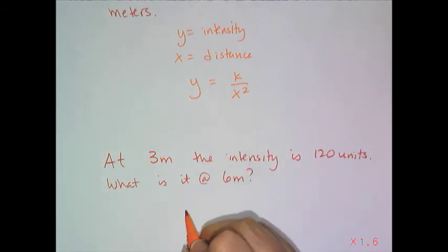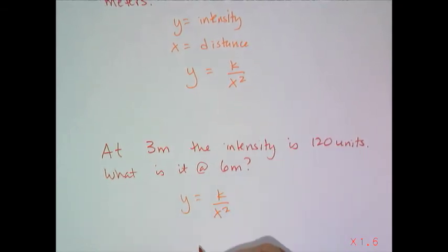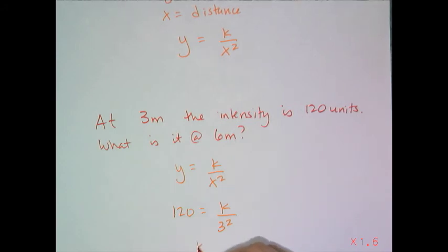I'm going to take my equation y equals k over x squared, plug in the information I have. I have 120 units of intensity at three squared, which means k for this particular setup is 1080, right?